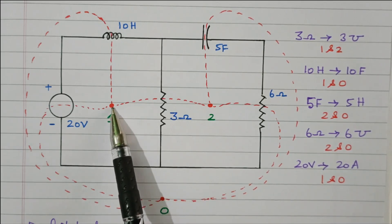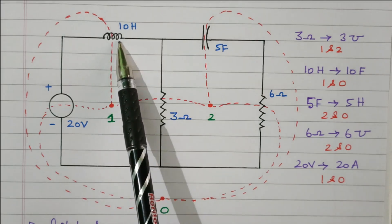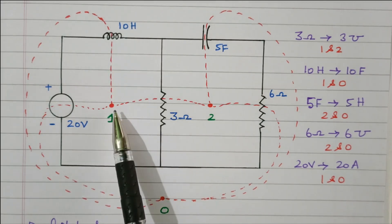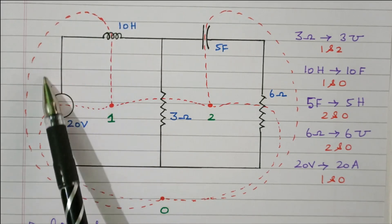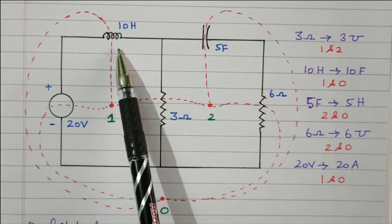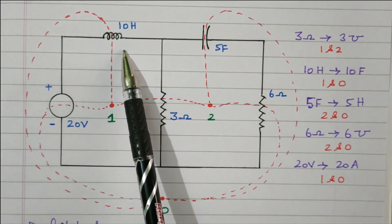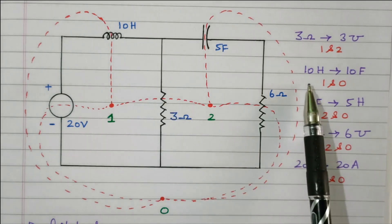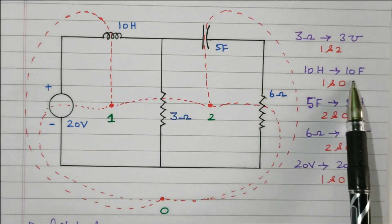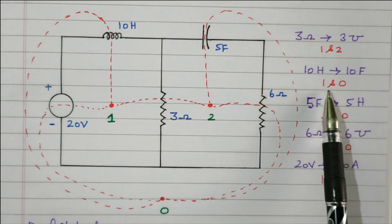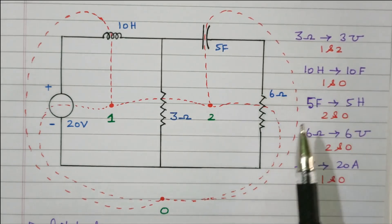Now we will connect 1 and 0 through the inductor — the 10-Henry inductor. This 10-Henry inductor will be converted into a 10-Farad capacitor. So, the 10 Henry is converted into a 10-Farad capacitor that is connected between 1 and 0.